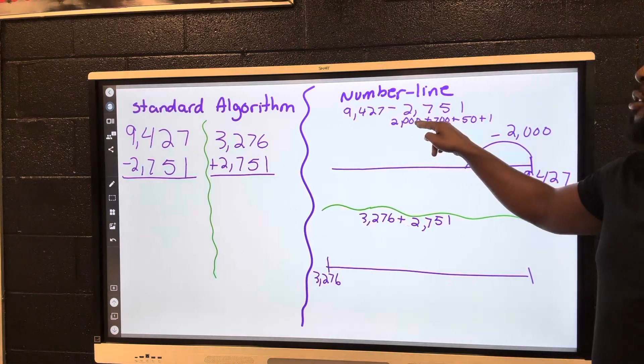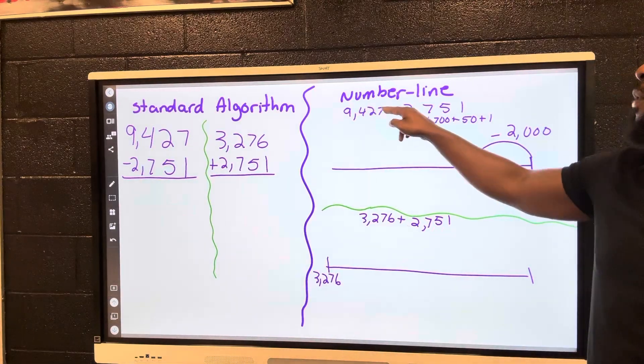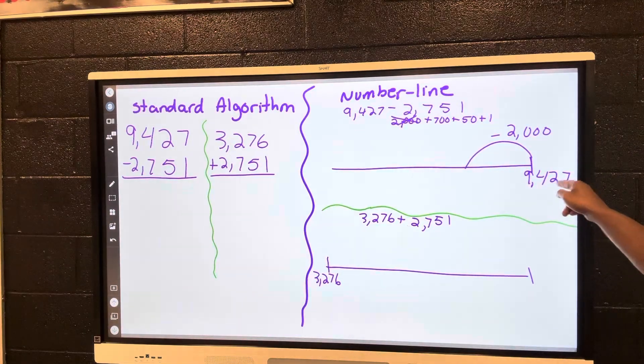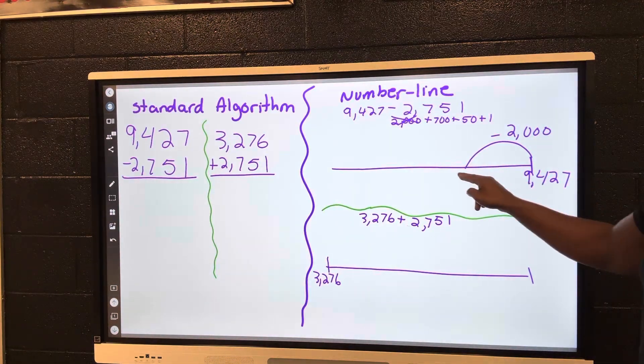First, we're going to take away the 2,000. 9,427 minus 2,000, which would be 7,427 because I just took the 2,000 from the thousands place.